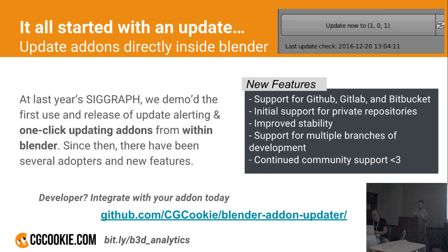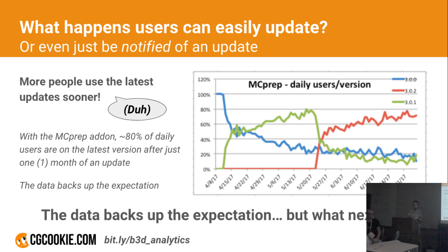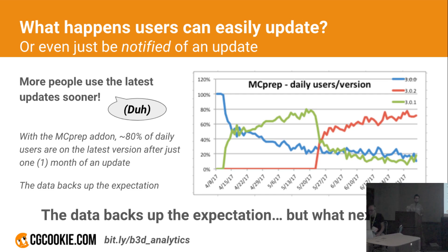One thing we wanted to understand after that is: what is the impact of having your users easily update? The obvious answer is they update sooner — more people are using your latest software sooner, they're notified of it, and they can choose to use the latest version. As a proof of this, in another add-on I developed called MC Prep, I implemented a very basic, rudimentary analytics tracking system — all user privacy permitting, opt-in, all those good things. I was able to see that within a month of a release or even sooner, 80% of users are already using the latest software, which is very powerful. It's a lot better than other platforms — if you're an Android user, it's like 50% of the market on two- or four-year-old releases, something crazy like that.